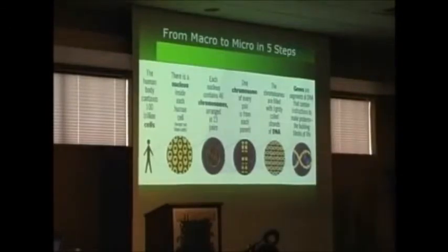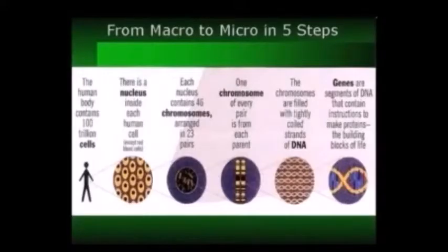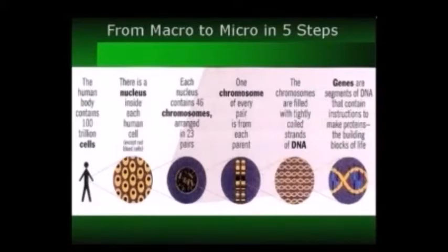Let's go through the lesson real quick. From macro to micro in five steps: the human body contains 100 trillion cells. There is a nucleus inside each human cell except blood cells and sperm cells. Each nucleus contains 46 chromosomes arranged in 23 pairs. One chromosome of every pair is from each parent. The chromosomes are filled with tightly coiled strands of DNA — genes, or segments of DNA that contain instructions to make proteins, the building blocks of life.